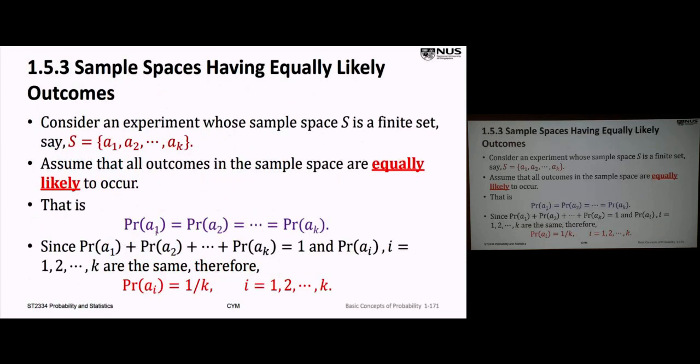Page 171 is the scenario I described before. We have an experiment with the state space S, with a collection of outcomes A1 up to AK. In this particular scenario, we're making a special assumption: that every possible outcome is equally likely. The probability of A1 equals the probability of A2, and so on. They're all equally likely.